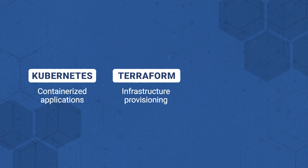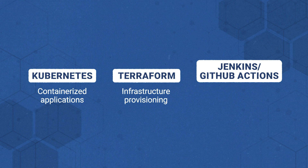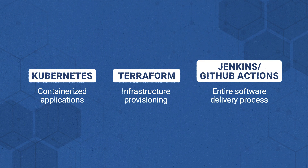In CI/CD pipelines, Jenkins or GitHub Actions orchestrate the entire software delivery process, from code commits triggering tests to deployment across development and production environments.